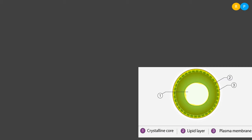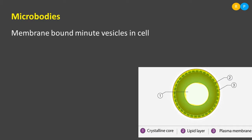Now we move to the last cell organelle to study, which is micro bodies. Micro bodies are membrane-bound minute vesicles in the cell. In the cytoplasmic region of the cell we can find some membrane-bound minute vesicles — vesicles are containers that carry something in the cell. These membrane-bound minute vesicles are named as micro bodies. The central region of this cell organelle is named as crystalline core, just outside which is the lipid layer, and the outermost membrane is the plasma membrane.